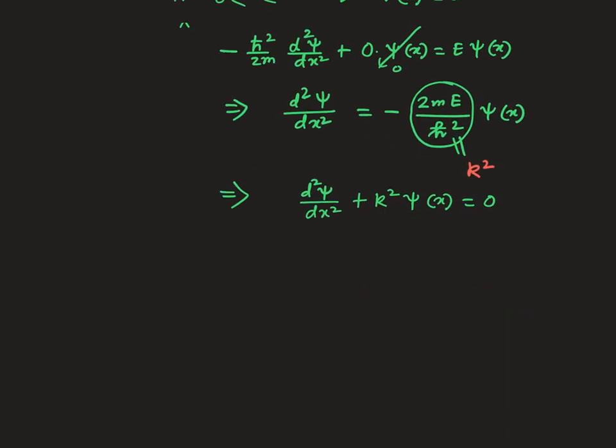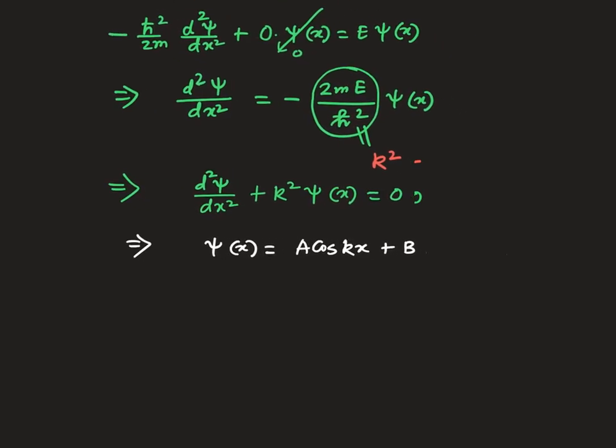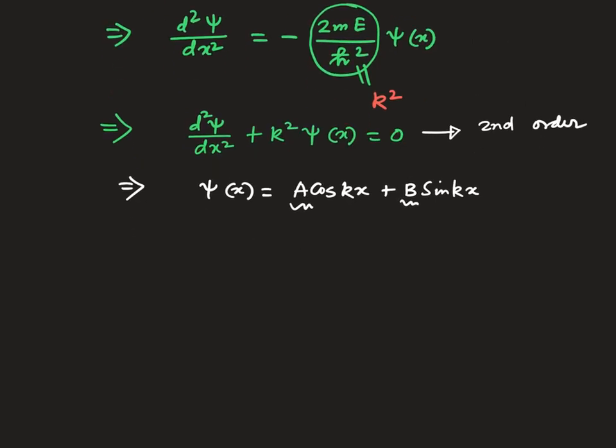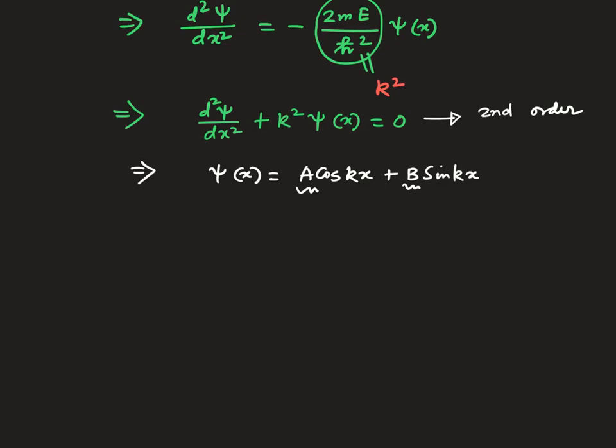So this differential equation is well known to all of you, and the solution is trivial, which is A cos kx plus B sin kx. As usual, this was a second order differential equation, and that's why you got two undetermined coefficients. So we need two boundary conditions so that we can get this coefficient A and B.